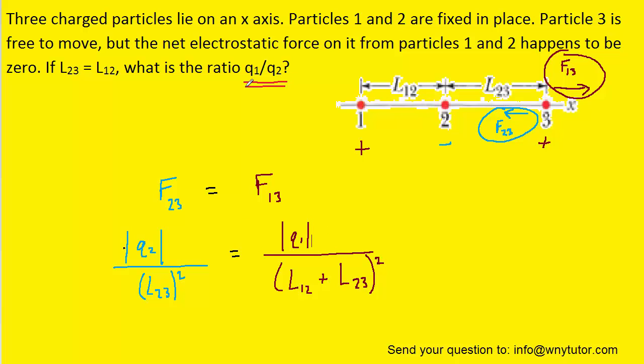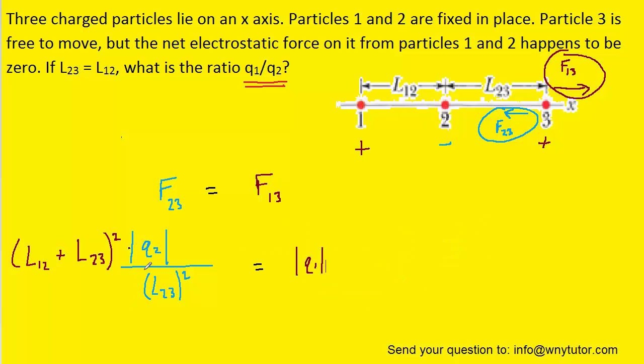Now, our goal is to find this ratio here, so somehow we have to algebraically get Q1 on top of Q2. And maybe to get that process started, we can multiply both sides of the equation by this term here. And on the right side, that will cancel out. Now, we can then divide both sides of the equation by the absolute value of Q2, so that it cancels out on the left side of this equation.